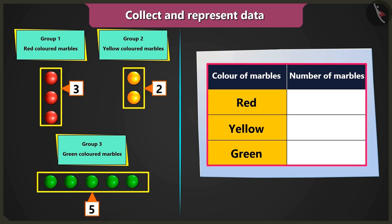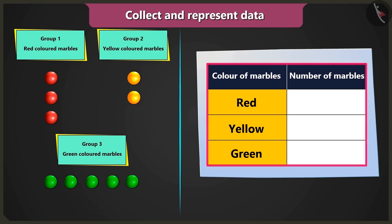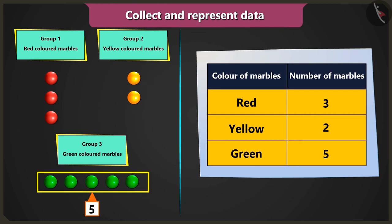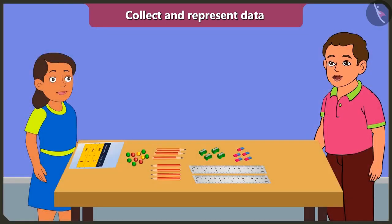Now we have to write these numbers in the table. Yes, now in the column count of marbles, we will write three beside red color, two beside yellow color, and five beside green color. Well done, Bubbly. You represented the data very well.